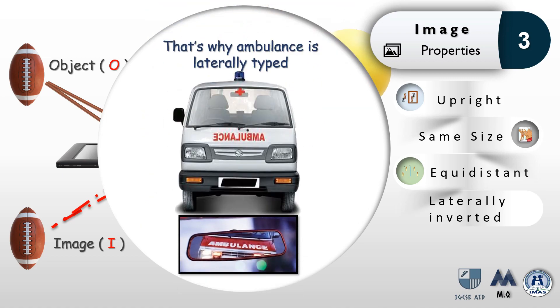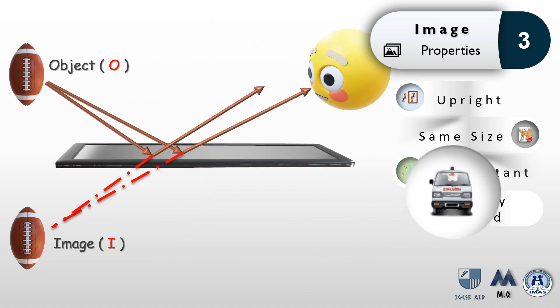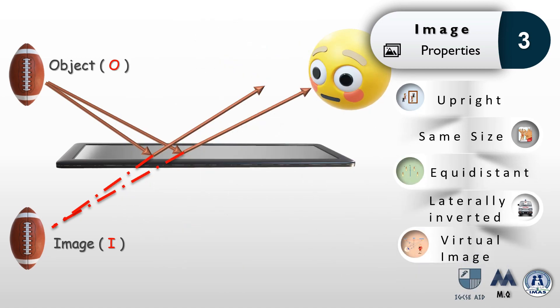This is what lateral inversion means, and this is something to be accounted for when designing the front slogans of ambulance vehicles. It has to be printed laterally inverted so that the cars in front of the ambulances will double invert it and view it the right way.